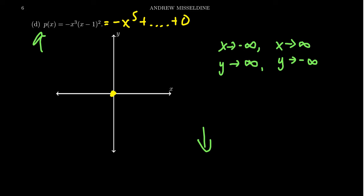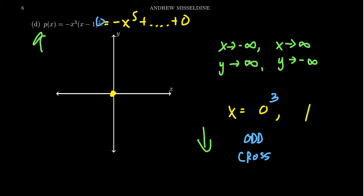Now let's investigate the x-intercepts. We have an x-intercept at 0 and an x-intercept at 1. x equals 0 came from x cubed, which shows up three times — odd multiplicity means the function will cross the x-axis at the origin. And x minus 1 shows up twice, so the multiplicity of 1 is 2, meaning our function is going to be touching the x-axis at x equals 1 because we have an even multiplicity.